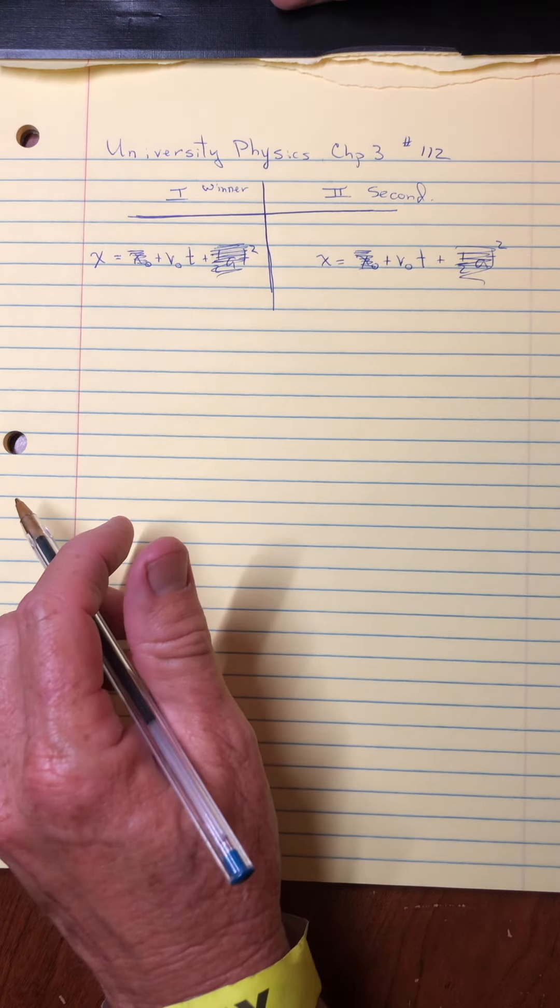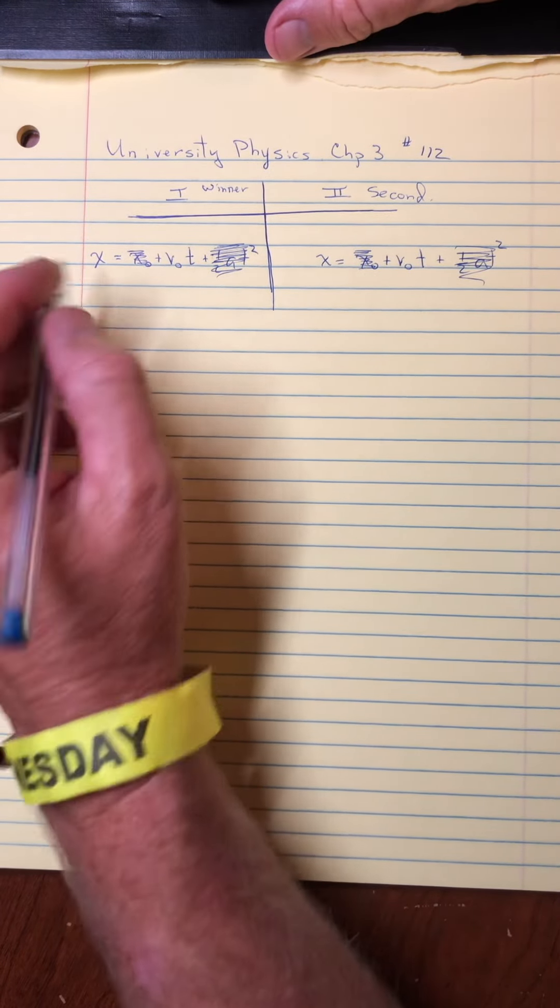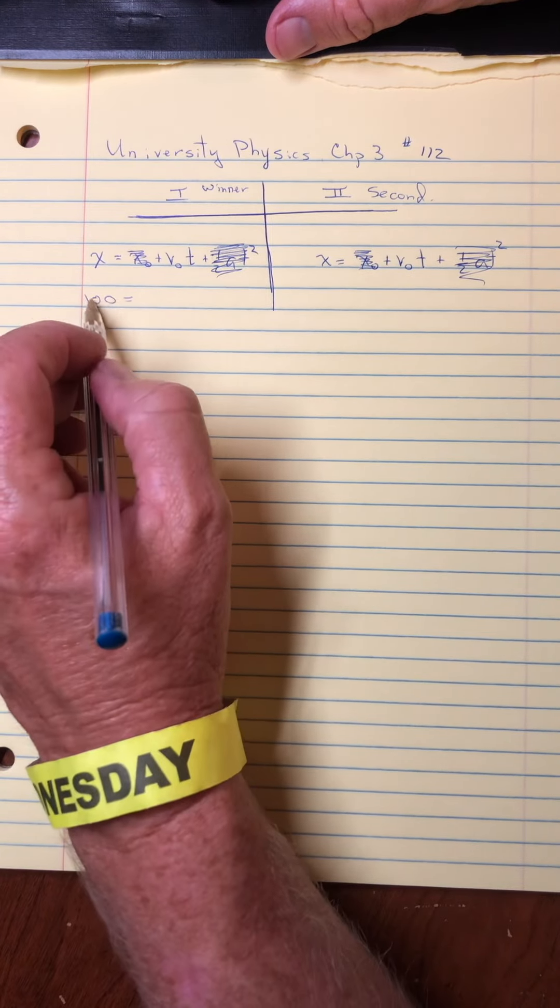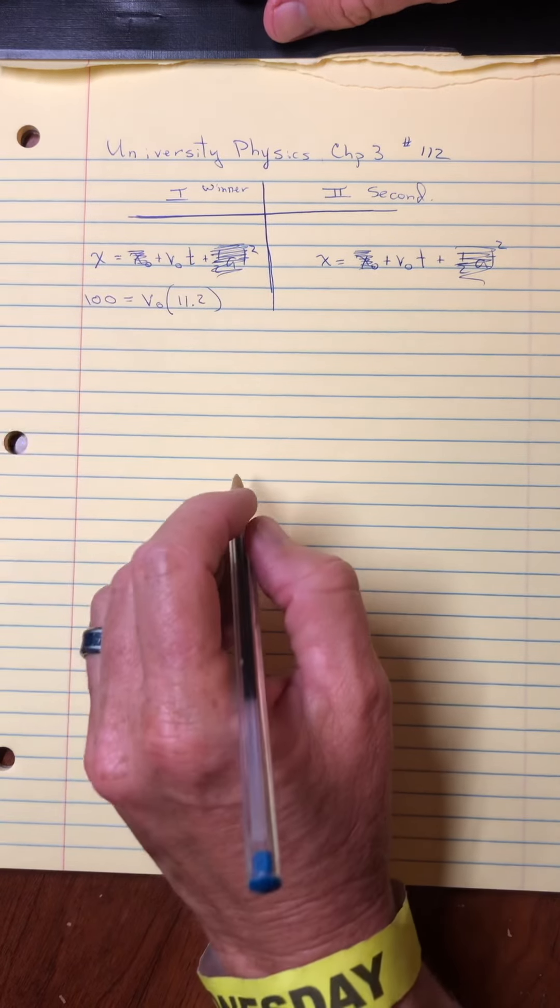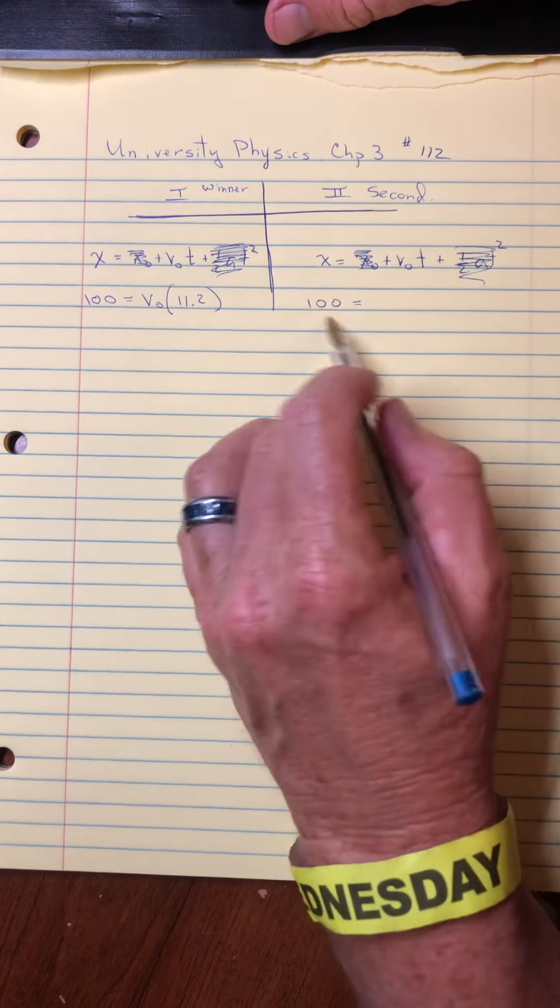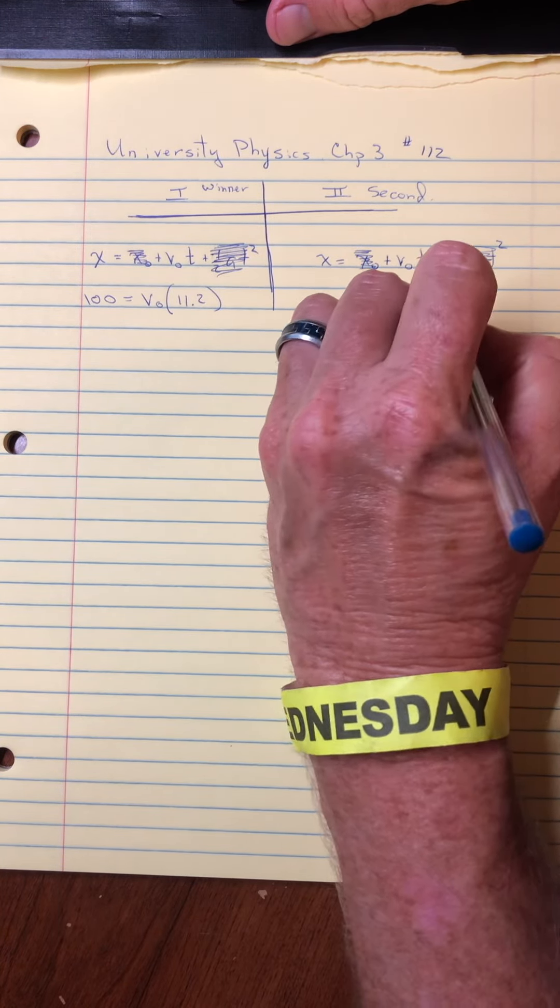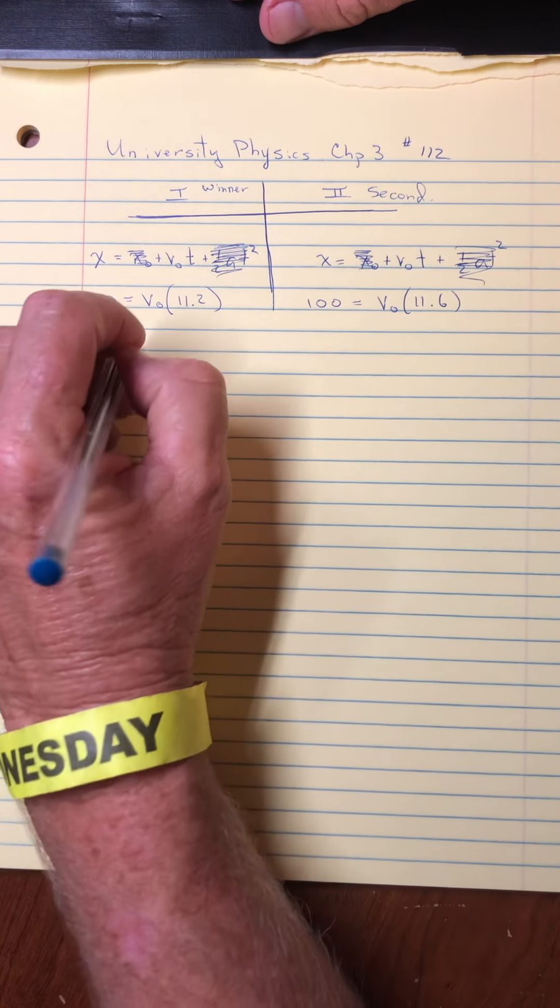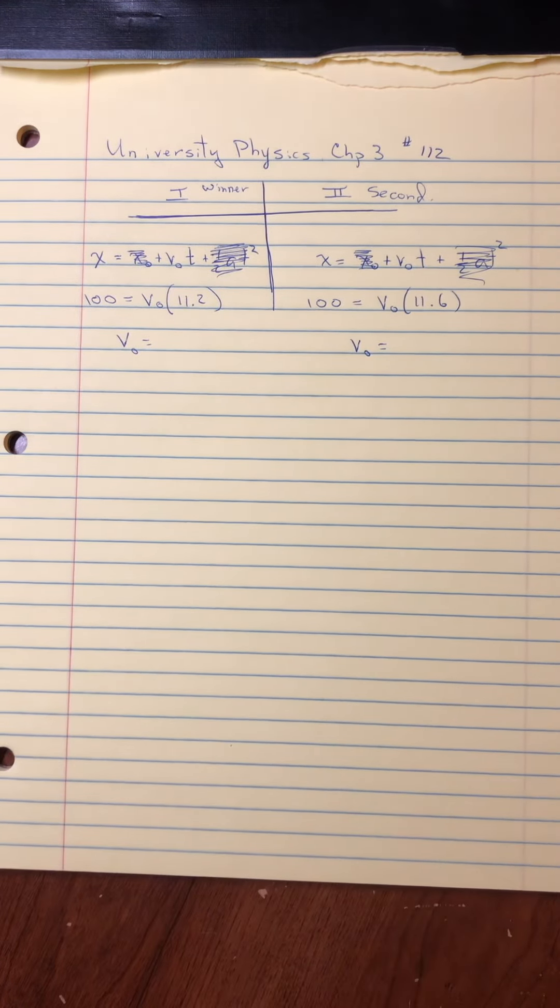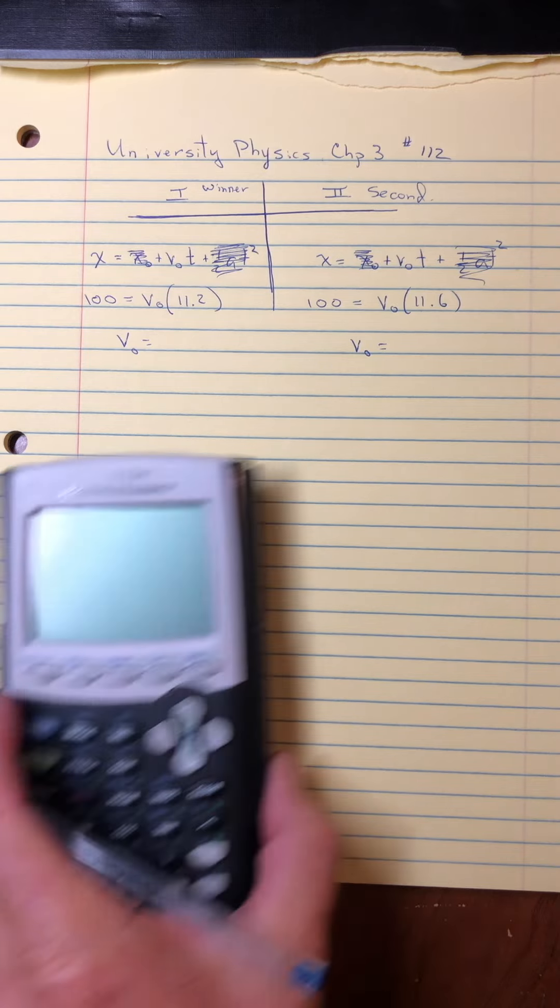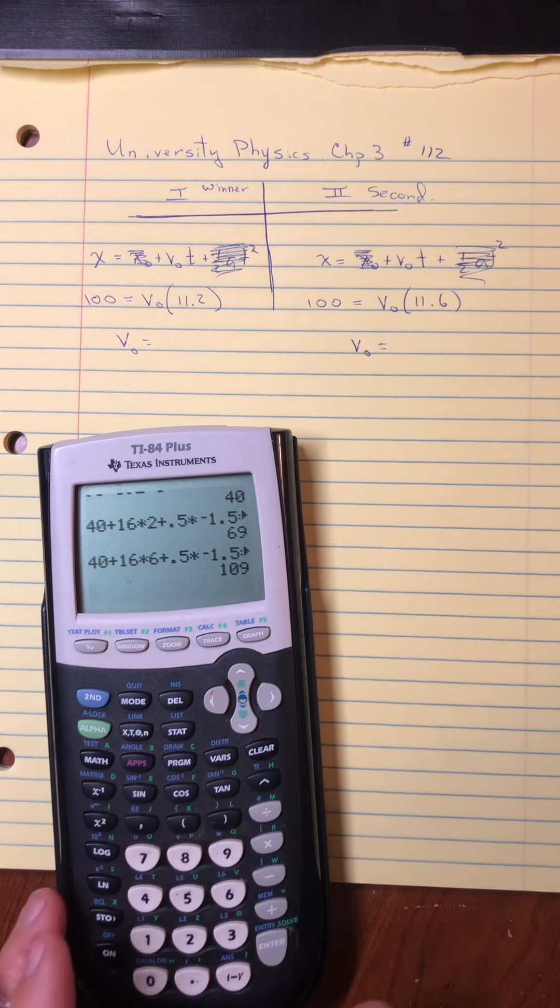And so because of that and knowing that it's a hundred meter race, you could put in the winner is at a position of a hundred meters at a time of 11.2. The second place finisher is at a hundred meters at 11.6. So that would allow us to figure out what that constant speed is across the race.